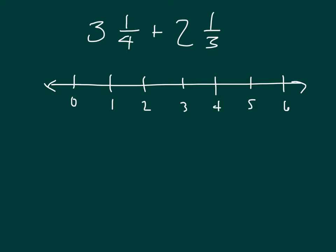Let's break apart and decompose these numbers. That is a mixed number where it is made up of a whole and a fractional part: 3 plus 1/4. We're adding together 2 and 1/3, so that's plus 2 plus 1/3.